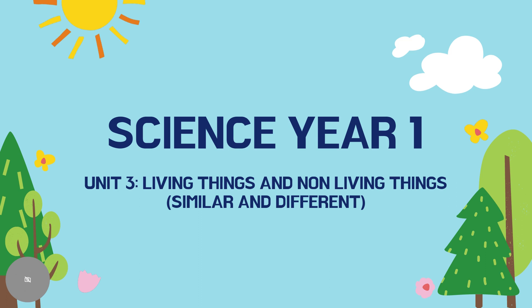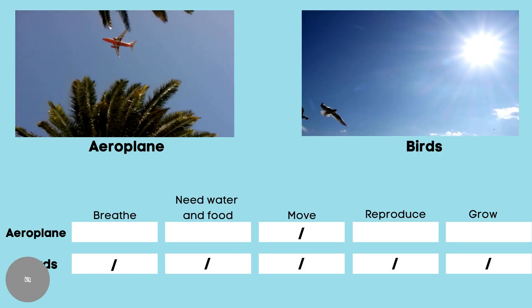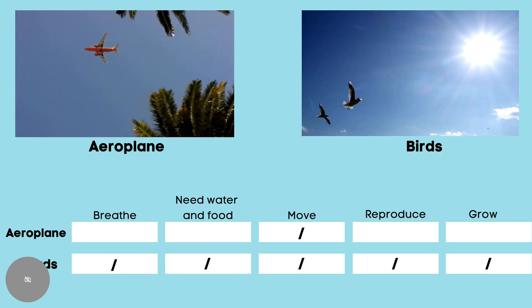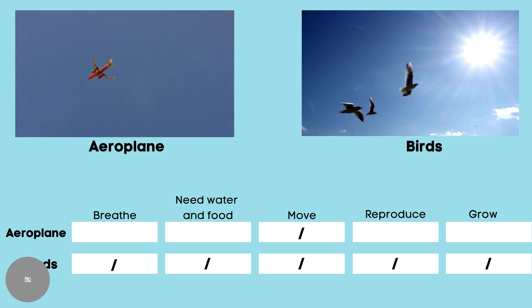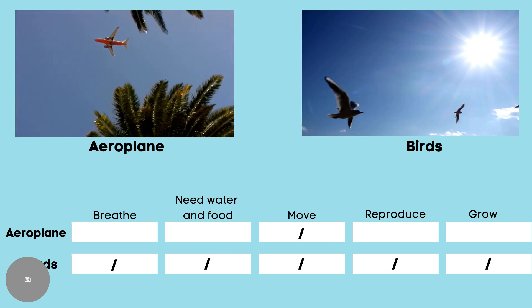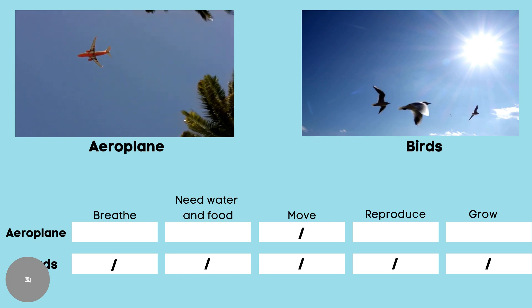Hi everyone, welcome back to our science lesson. Today, we are going to learn about the similarities and the differences between living things and non-living things. Let us watch these videos. The first video is an aeroplane and the second video is a bird.